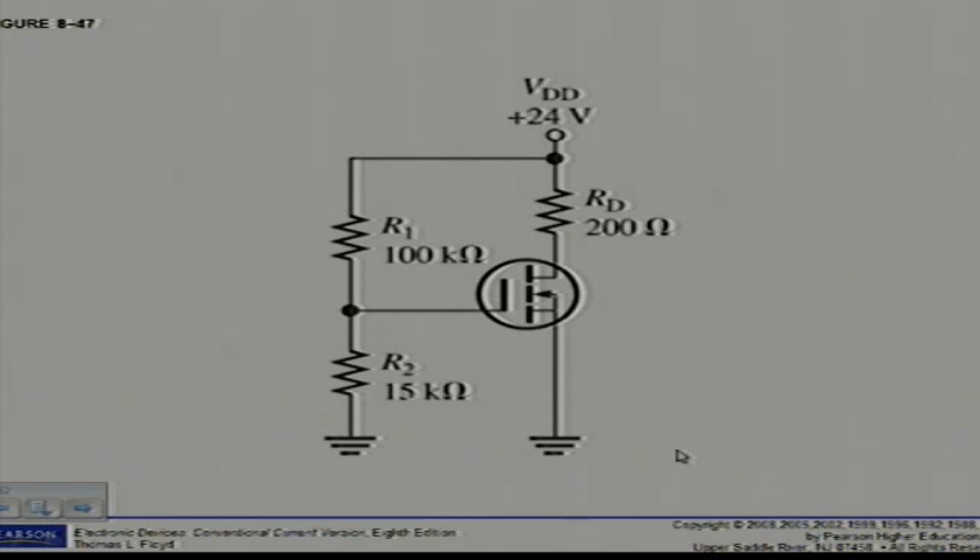Now calculate ID. Same as we've done in the previous example. ID is equal to then the normal formula K brackets VGS minus VGS threshold squared, get an answer of 63.8 milliamps. And then finally calculate VDS using Kirchhoff's law, is VDD minus ID RD. Just calculate it and I get a value of 11.2.